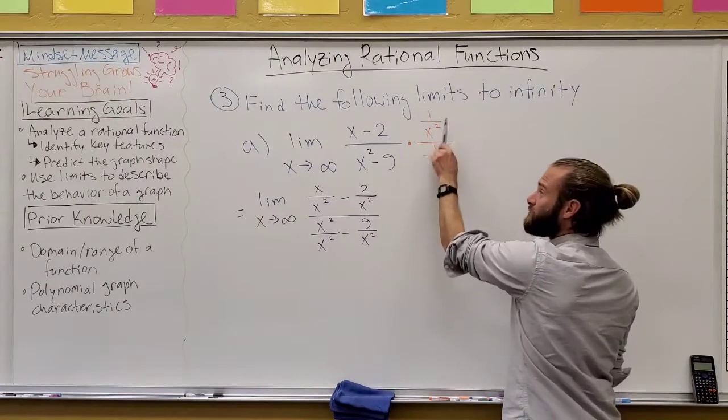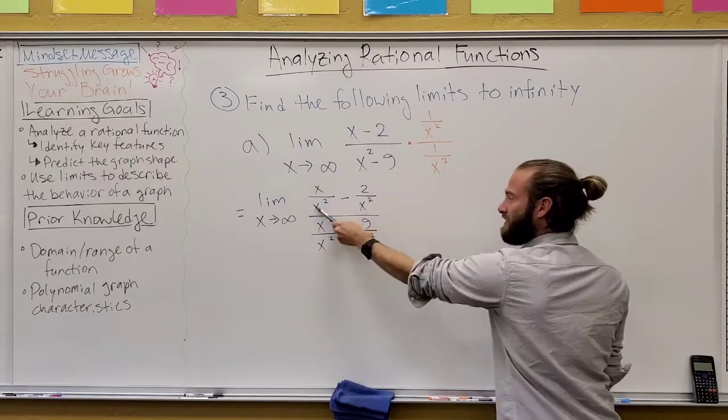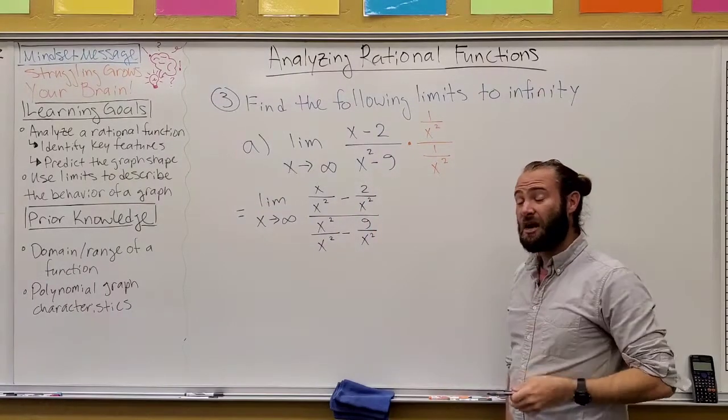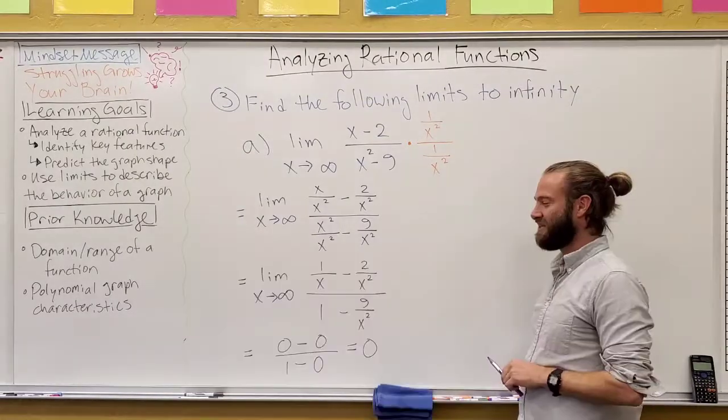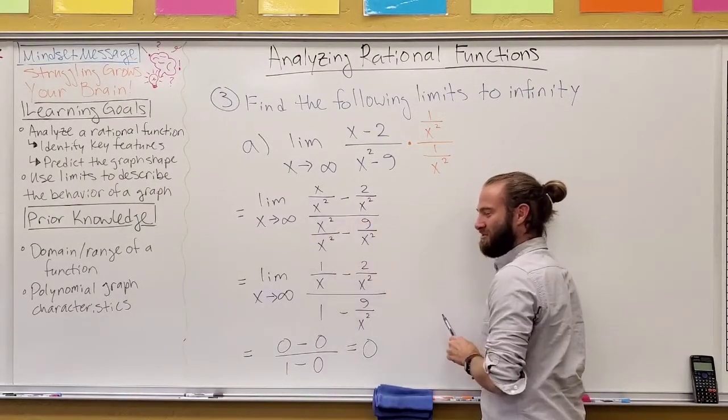Now this may seem really weird to you, but watch these steps I put down here. There's a reason why I chose this to use. Now, when I distribute this 1 over x squared into everything, then everything essentially gets a denominator of x squared.